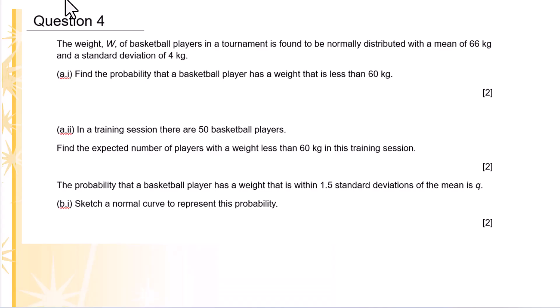The weight W of basketball players in a tournament is found to be normally distributed with a mean of 66 kg and a standard deviation of 4 kg. Find the probability that a basketball player has a weight that is less than 60 kg.